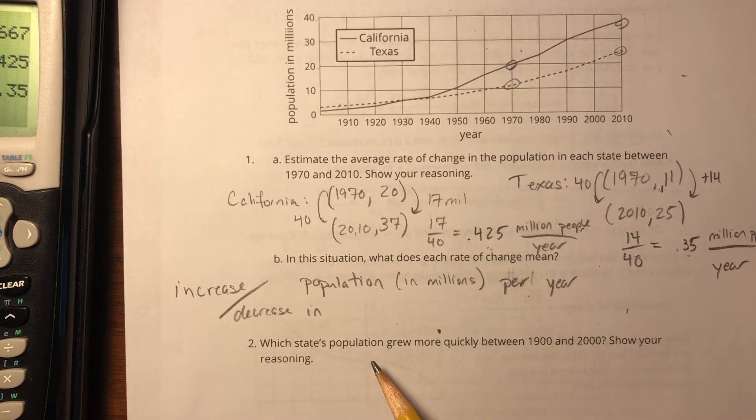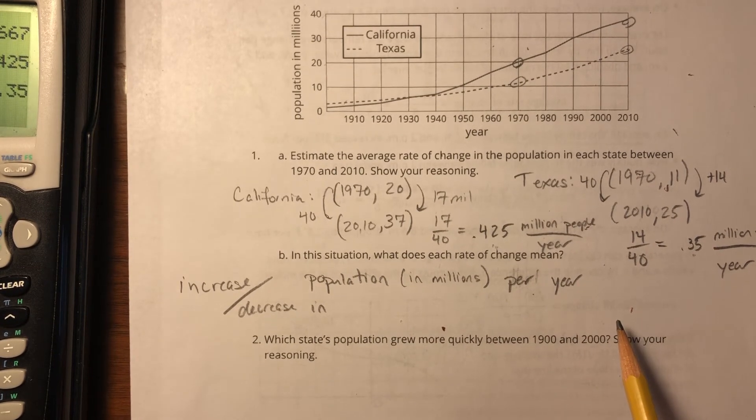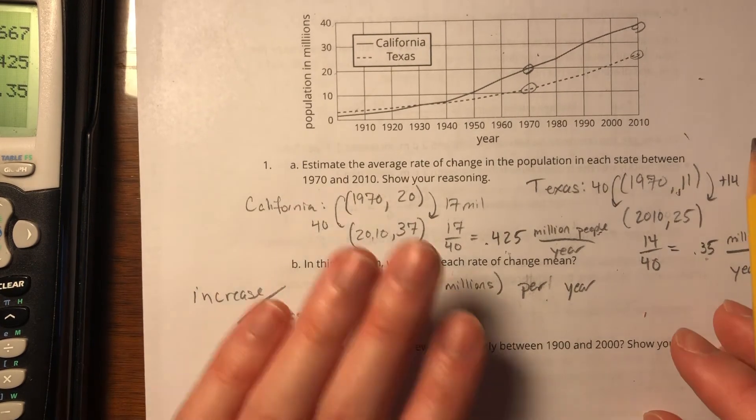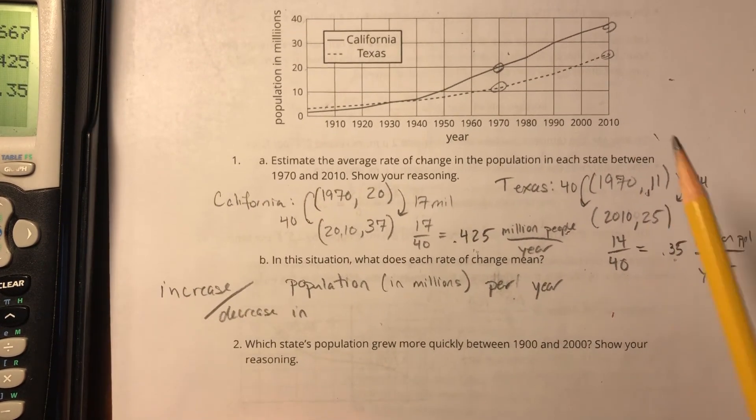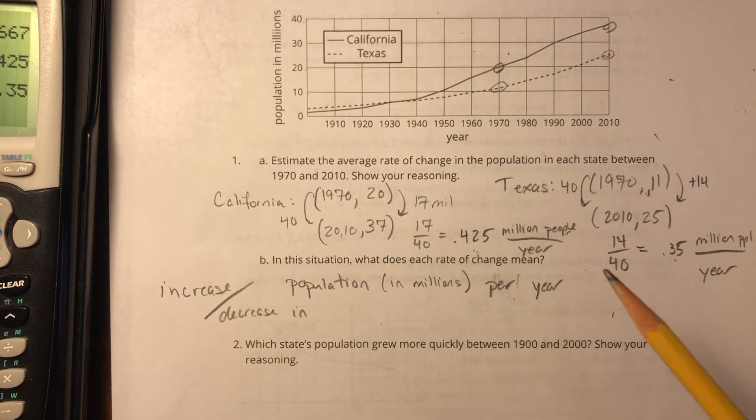So which state's population grew more quickly between 1900 and 2000? Show your reasoning. Okay, so they're asking which had a greater rate of change. I could go ahead and calculate the rates of change again, but honestly, I think that would be a little too much work.